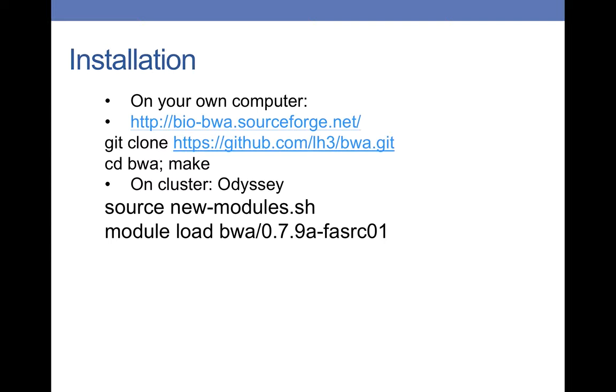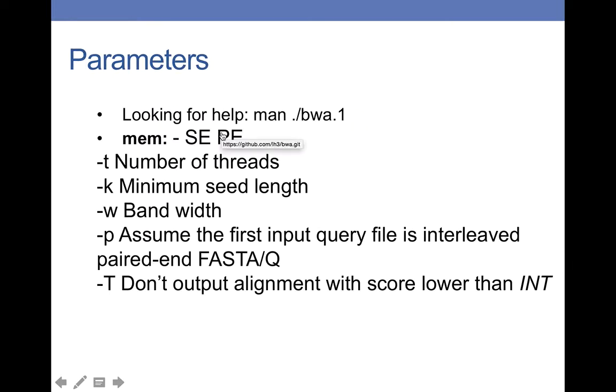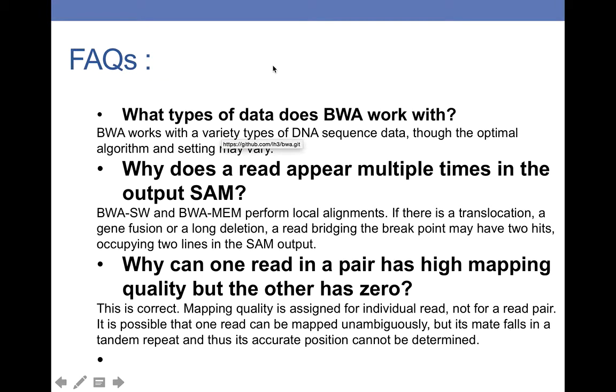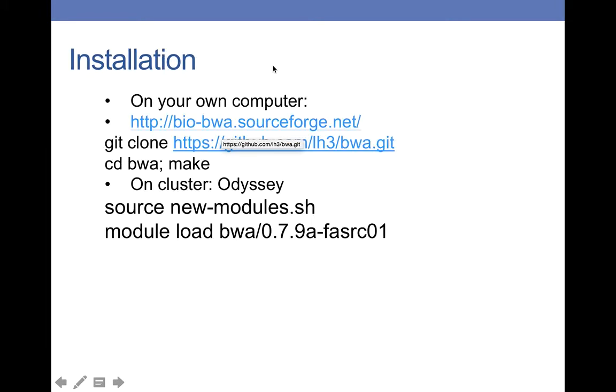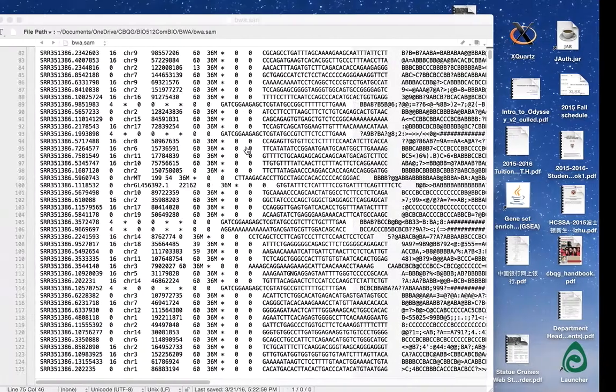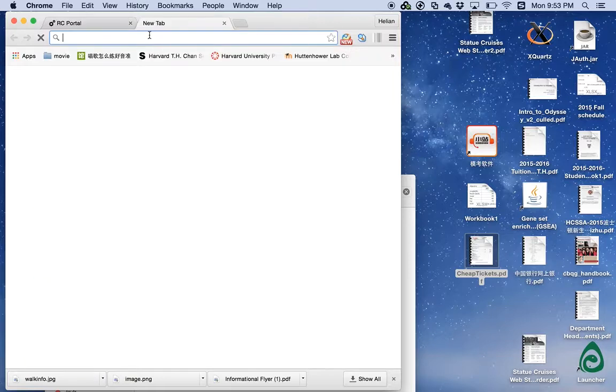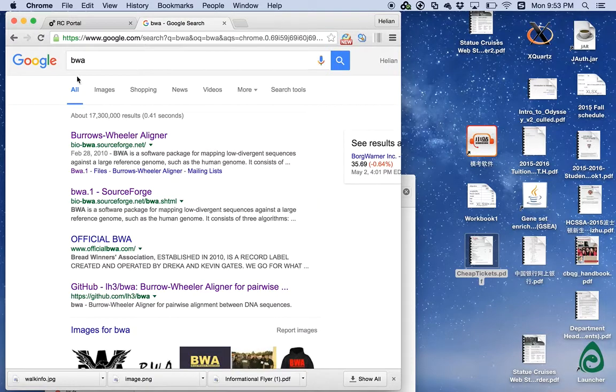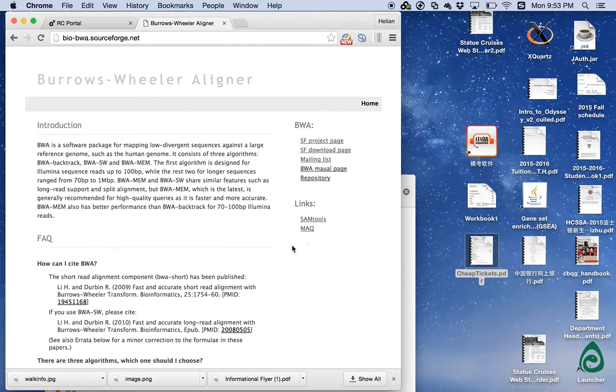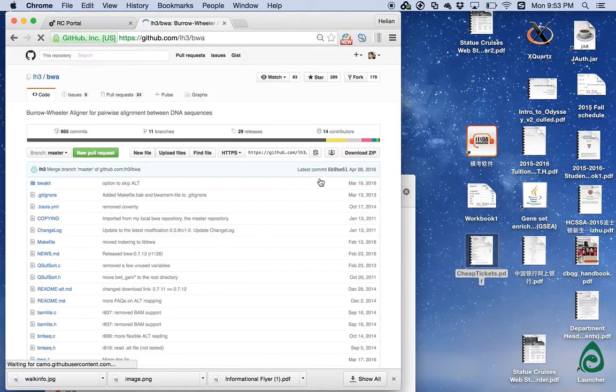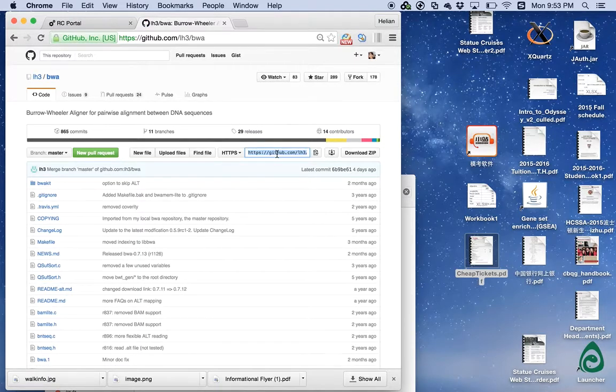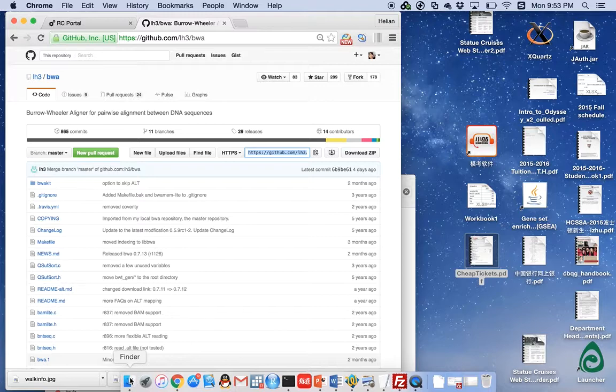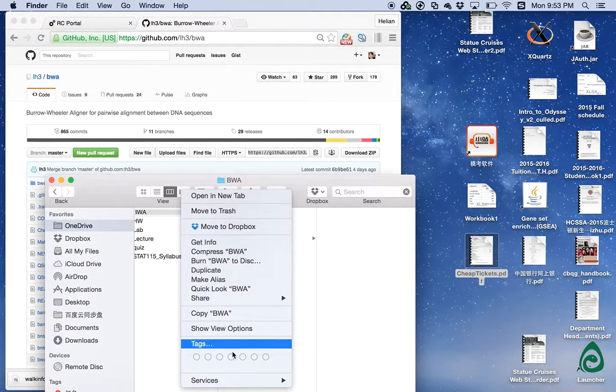First, installation. You can install BWA both on your computer or load it as a module on Odyssey. To install it on your computer, go to Chrome and search BWA. Click the first website which is the official BWA website. Go to repository and copy the link at the bottom.